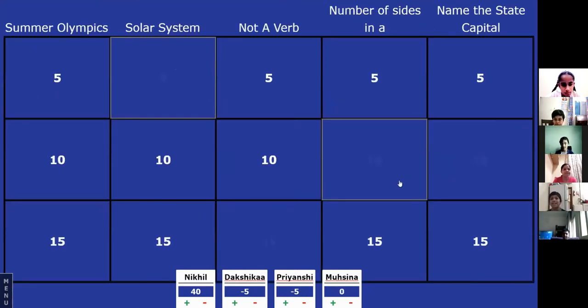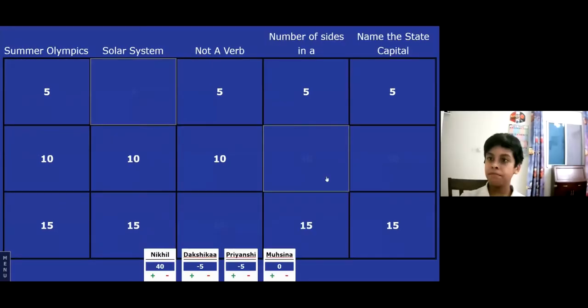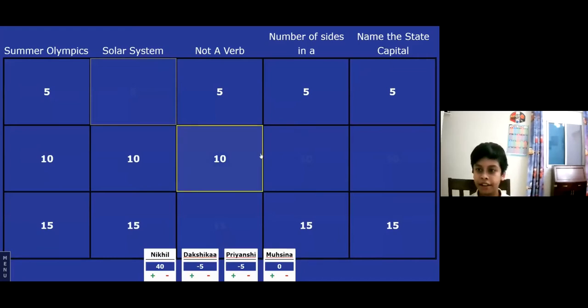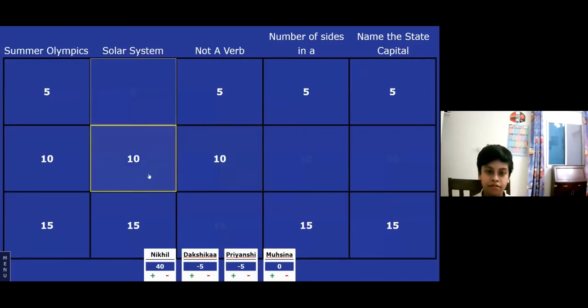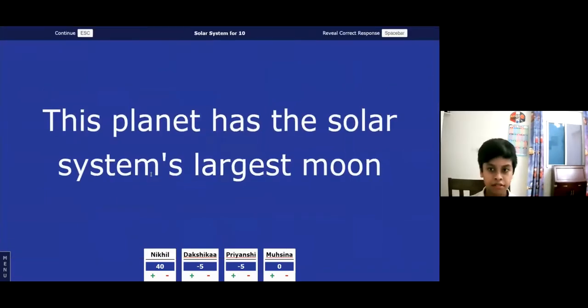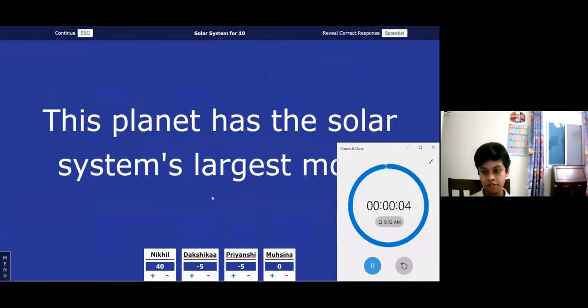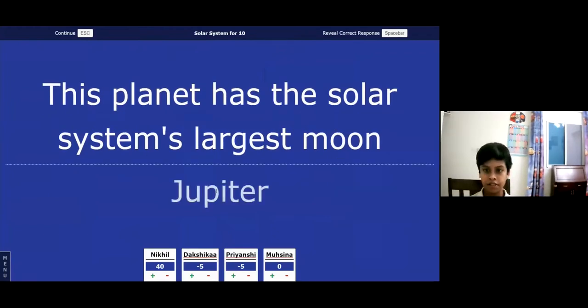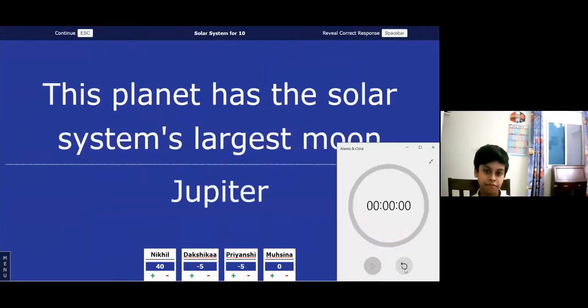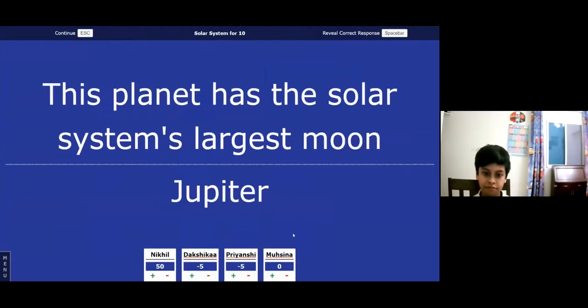Nikhil, you make the choice again. This will be the final round of questioning. Solar system. What's the point? Ten. And your clue is this. This planet has the solar system's largest moon. Jupiter. Jupiter. And Jupiter is the right answer. You get ten points.